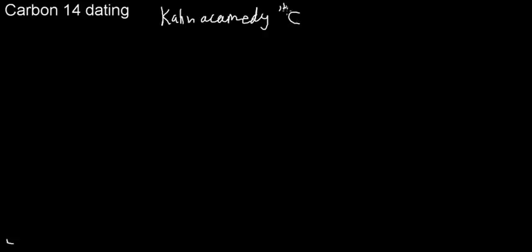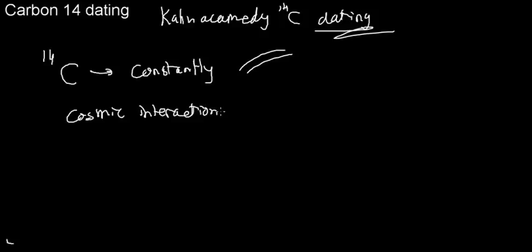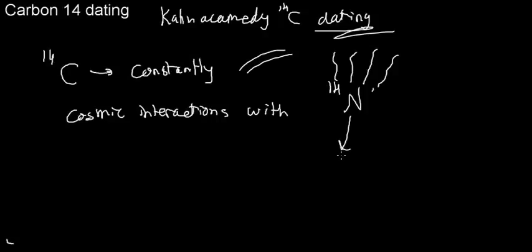Let's touch on the basics of carbon-14 dating. Khan Academy has great videos on this topic. Carbon-14 is constantly forming in our atmosphere due to cosmic interactions with nitrogen — cosmic rays come in, interact with nitrogen, and turn it into carbon-14. Carbon-14 is constantly forming.